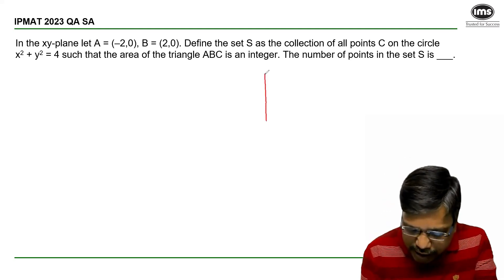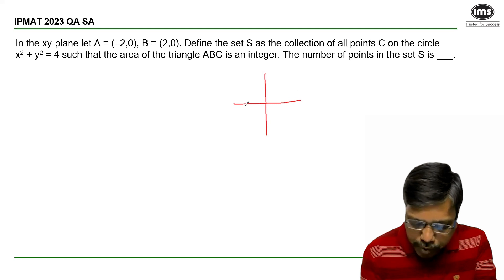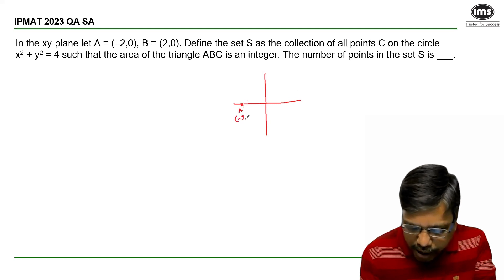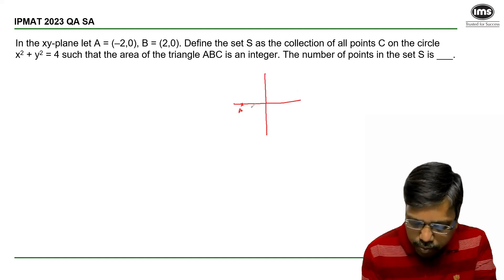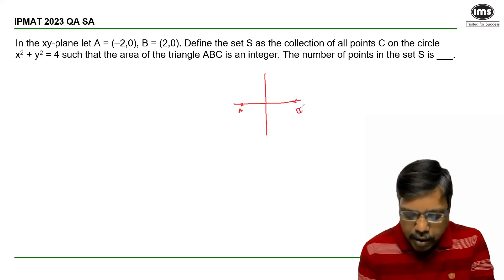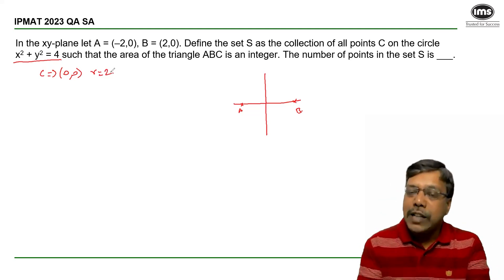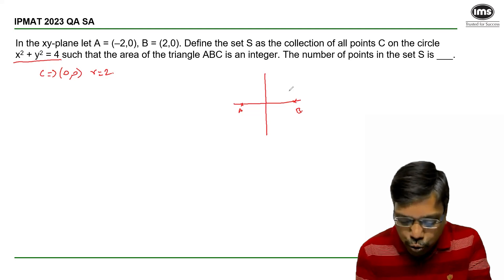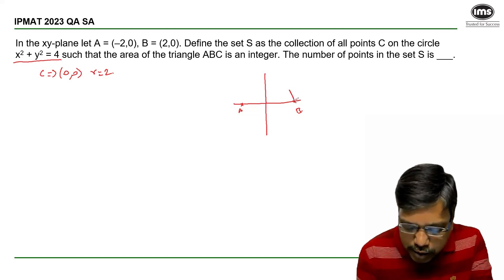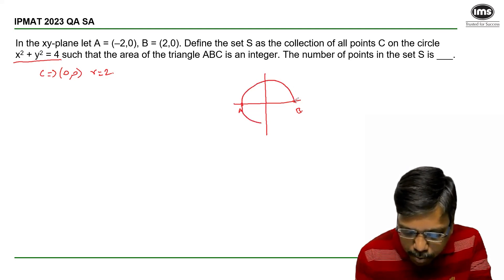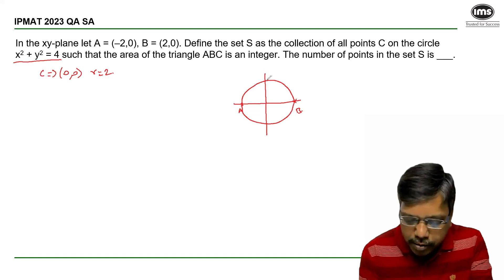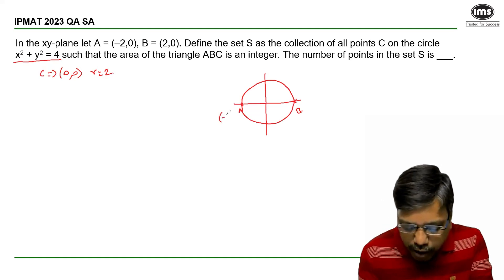Now suppose if I consider this to be the coordinate axis where this is A minus 2 comma 0 and this is B. Now when I say x square plus y square is equal to 4, the center will be origin and the radius is 2 units. If I draw a circle with the center as origin and radius as 2 units, this is how the circle would look like roughly. Obviously passes through A and B. Now A is minus 2 comma 0, B is 2 comma 0.